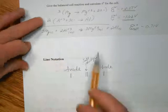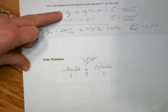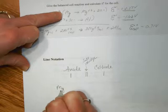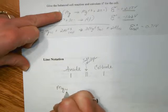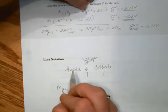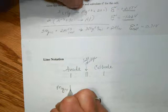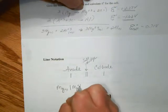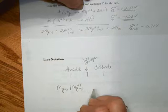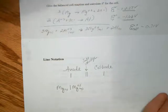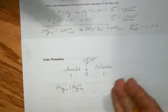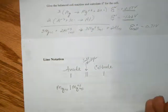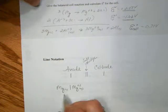So our anode will be our oxidation. So we usually want to start with the electrode, the solid, first. It is coinciding with the magnesium ion in solution. If we would have water in our half reaction, we don't show that. If we have hydrogen ion, we would show that, or hydroxide ion. So we're done for the anode.